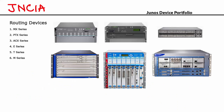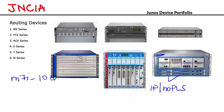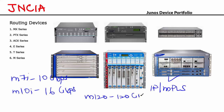The M series routers are multi-service edge routers with combined capabilities of both IP and MPLS. There are 4 models: the M7i at 10 Gbps, the M10i at 16 Gbps, the M120 at 120 Gbps, and the M320 at 320 Gbps. Those are the routing devices in the M series, and overall those are the routing devices covered in this video.